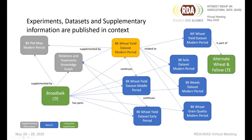In this example for Broadbalk, which is our longest running experiment, the experiment is split into three main periods, and there's a wheat yield dataset corresponding to each of those periods. For our most recent modern period, there are additional datasets — one for soils, one for weeds, and one for grain quality. Using this schema, we can define the relationships between these different resources, and we can even define relationships to datasets from other experiments, such as a wheat yield dataset from our alternate wheat and fallow experiment.